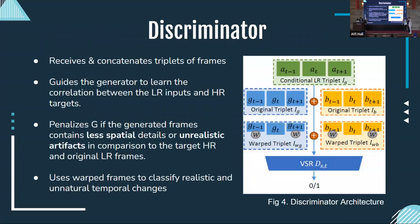The discriminator also proposes a new ping-pong loss function to achieve highly temporal flow between the low-resolution and high-resolution generated images. The discriminator receives and concatenates triplets of frames. It guides the generator to learn from high-resolution and low-resolution frames. The generator is penalized if the generated frames contain artifacts or are unrealistic. Finally, the warped frames are used to classify unrealistic and unnatural temporal flows.